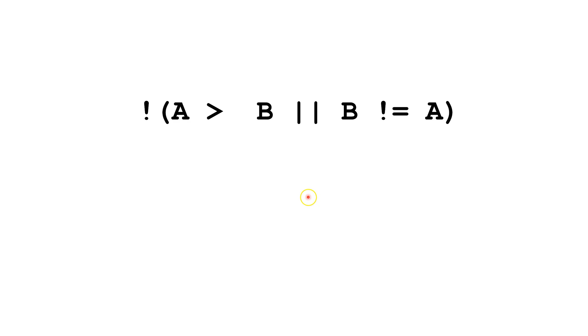Let's look at a compound Boolean expression and see how we can come up with a simplified equivalent using DeMorgan's laws. We have our Not outside some parentheses. A is greater than B or B is not equal to A.